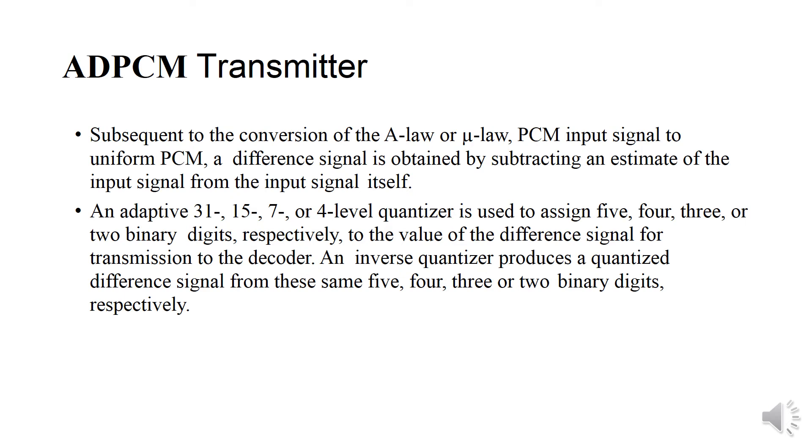In the transmitter block, subsequent to the conversion of Mu-Law and A-Law, the PCM input signal is uniform. The difference signal is obtained by subtracting an estimate of the input signal from the input signal. An adaptive 31, 15, 7, or 4 level quantizer is used to assign 5, 4, 3, or 2 binary digits respectively to the value of the difference signal for transmission to the decoder.